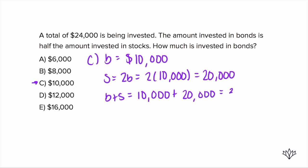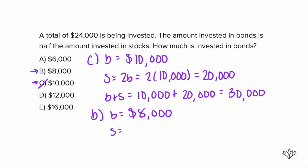So let's try answer choice B, $8,000. So let's say $8,000 is our B. We don't know our S. So what do we know? The amount that's invested in bonds is half of what's invested in stocks. So if we have $8,000 for bonds and we have twice that for stocks, we have $16,000 for stocks. Two times $8,000 is $16,000. Eight and $16,000 does give us $24,000. So we know answer choice B is correct.